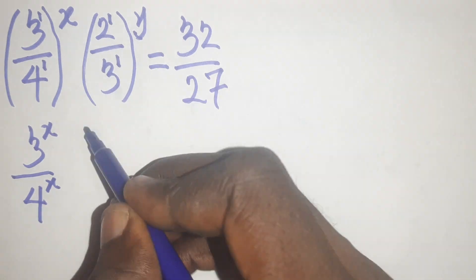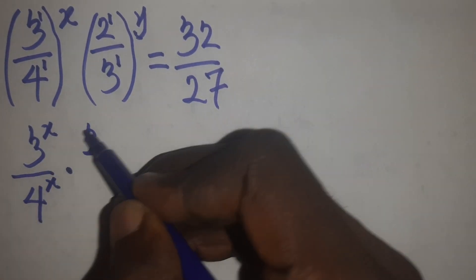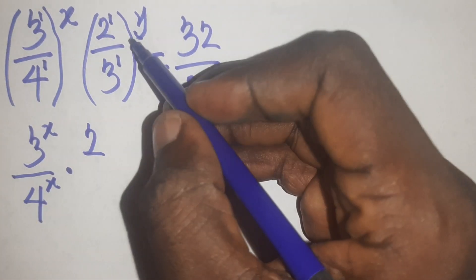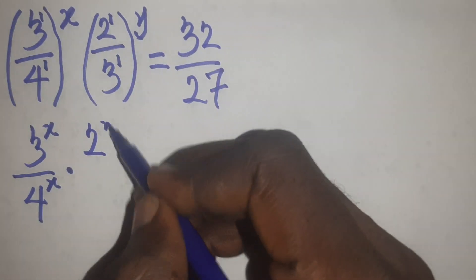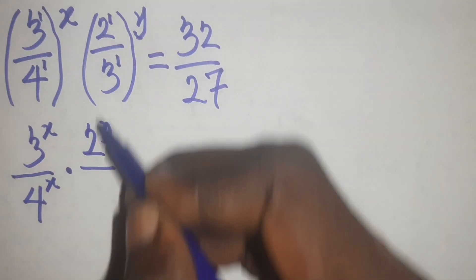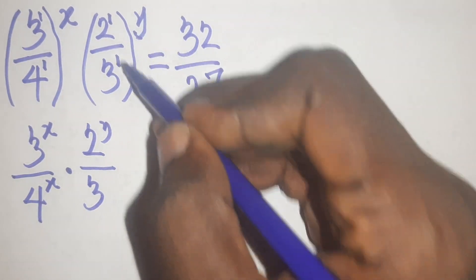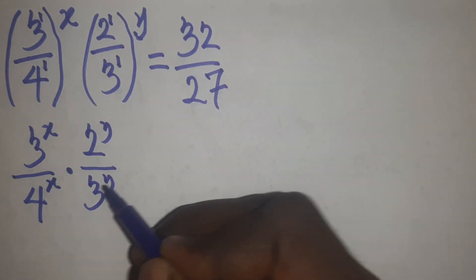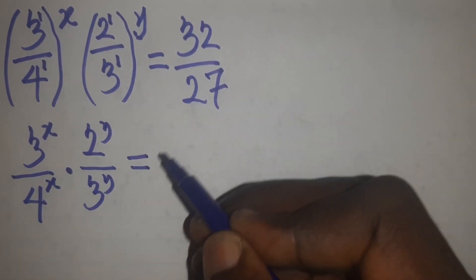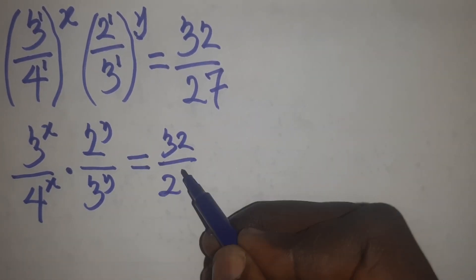Then here too, I open the bracket the same way. Write my 2 first of all — there is multiplication between the two fractions — so y times 1 is y over. Write down my 3 and then y times 1 is y, equals 32 over 27.